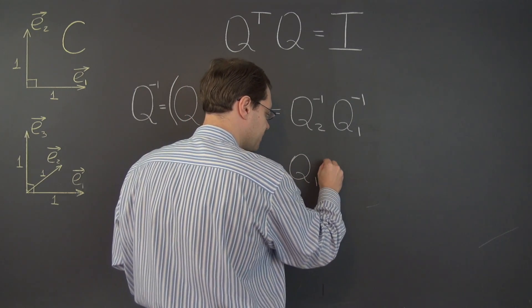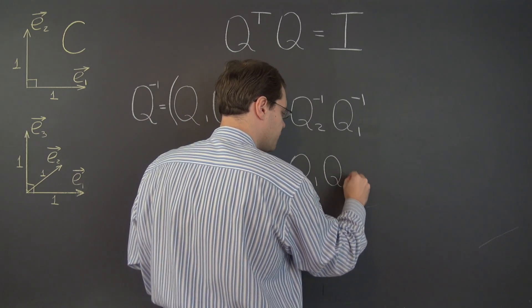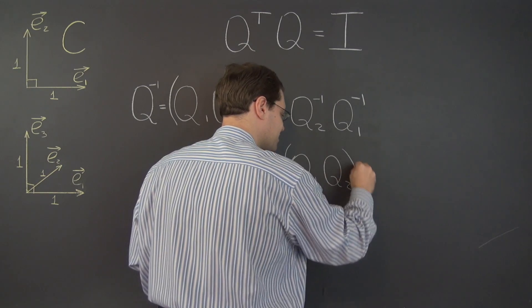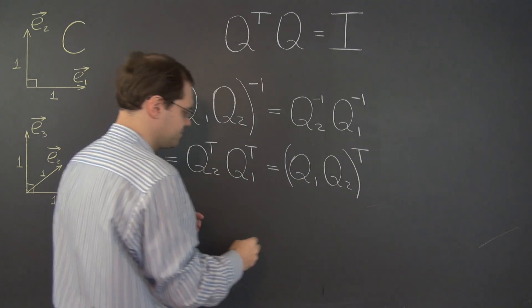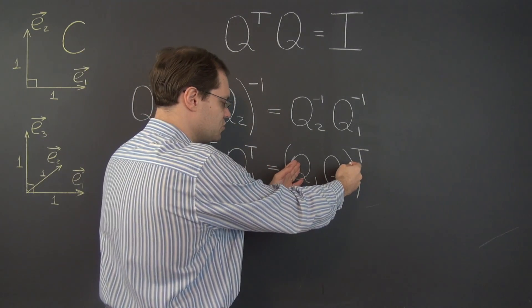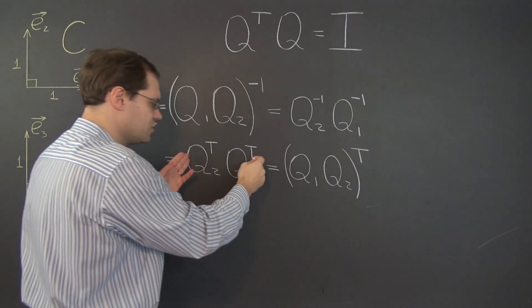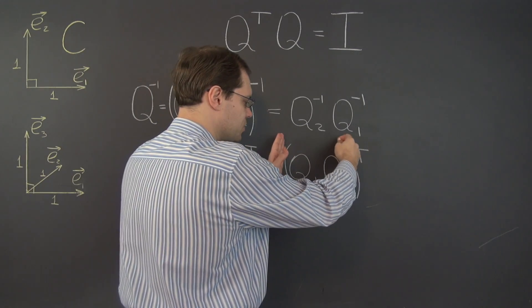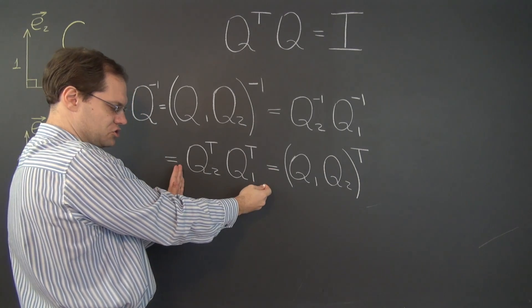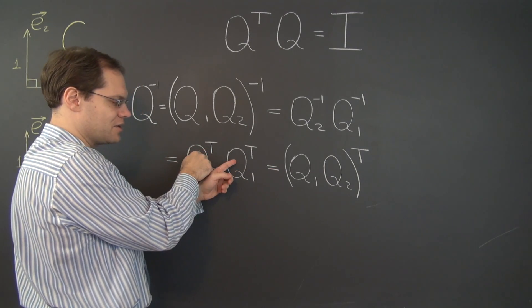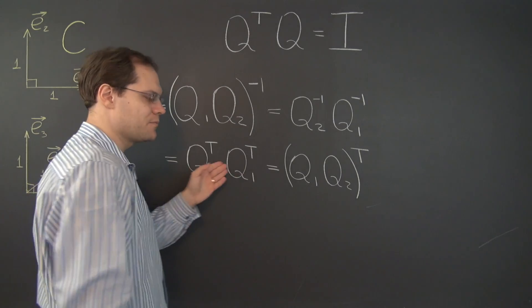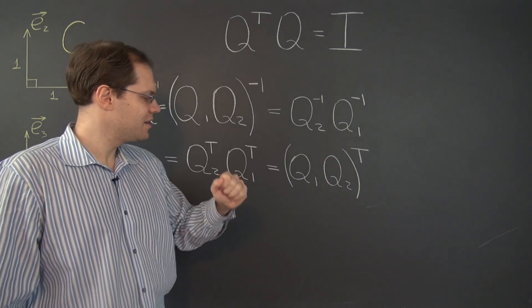So we have Q1 Q2 product transpose. It might be easier for you to see it as going from here to here. The transpose of this product is the product of the individual transposes in the opposite order. So if we can go this way, we can also go this way.